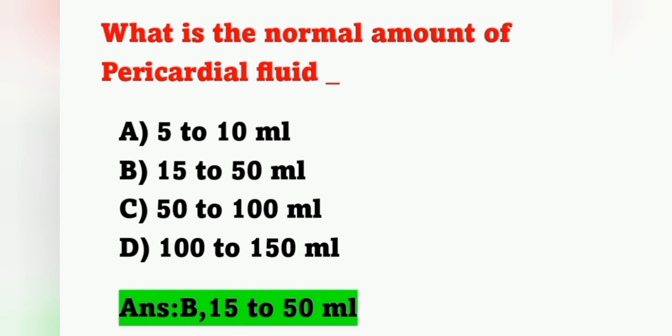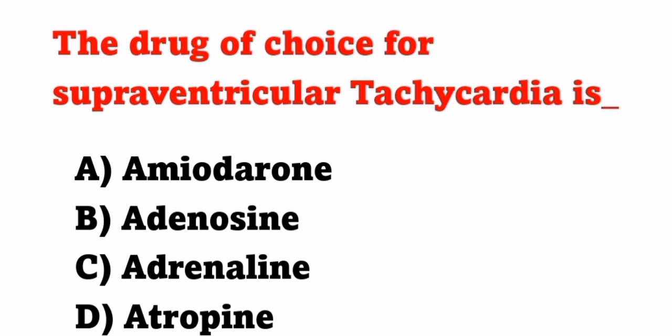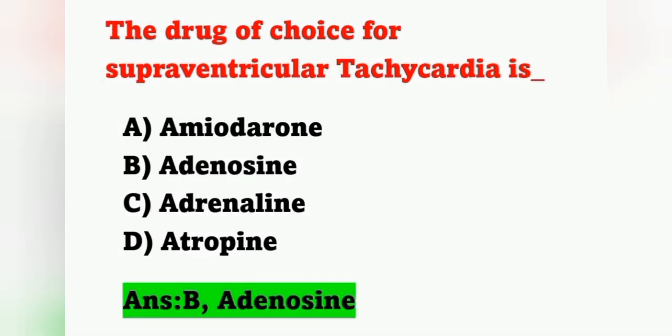Next question: the drug of choice for supraventricular tachycardia is? Options: A) Amiodarone, B) Adenosine, C) Adrenaline, D) Atropine. The drug of choice for supraventricular tachycardia is adenosine. Option B is the correct answer.